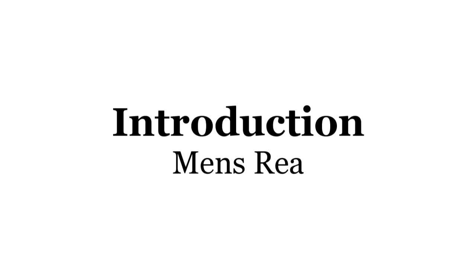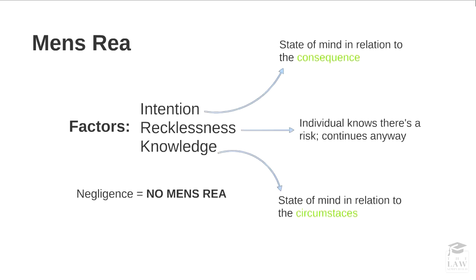In this lesson we're going to look at the internal element or mens rea in relation to a crime. There are several factors in relation to the mental state or intent component of a crime. On the one hand you have intention, which relates to the consequence or the state of mind. You have recklessness, where an individual knows there's a risk and that there is a probability of something bad happening regardless and continues anyway. You also have knowledge in relation to the circumstances, which might relate to an omission as well. It must be noted that negligence does not equate to mens rea unless there is a duty imposed on the defendant.